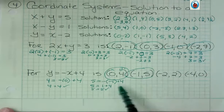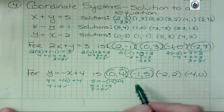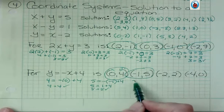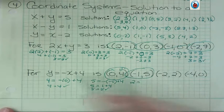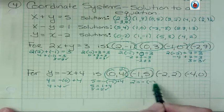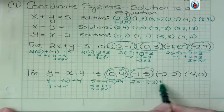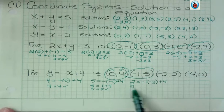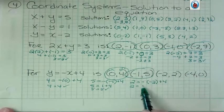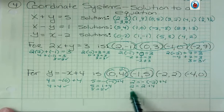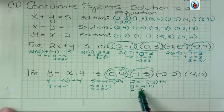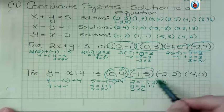What about this one, negative 2, 2? Well, y needs to be 2. I have a negative out front, and I'm plugging in a negative 2. So I have negative, negative 2, which is positive 2 plus 4, and 2 equals 6. Not true. This is not a solution.